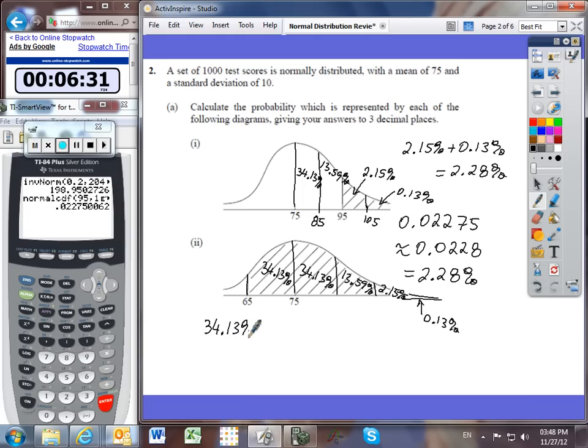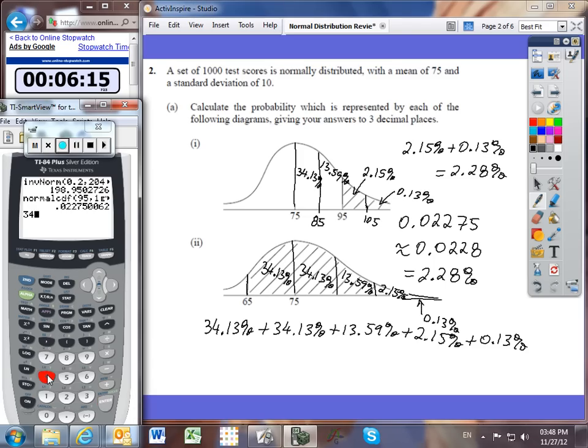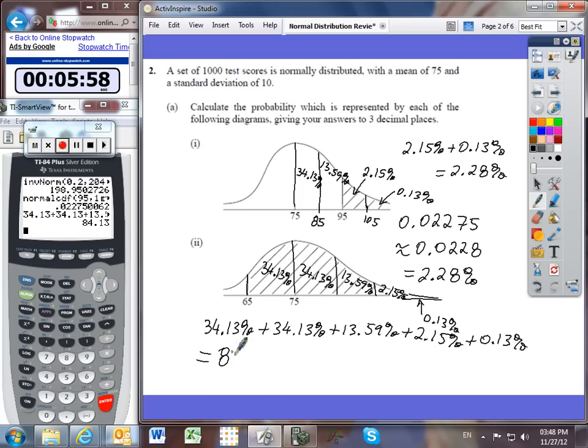So if I added all of these percentages that have been shaded together: 34.13 plus 34.13 plus 13.59 plus 2.15 plus 0.13, gives us a total of 84.13%.